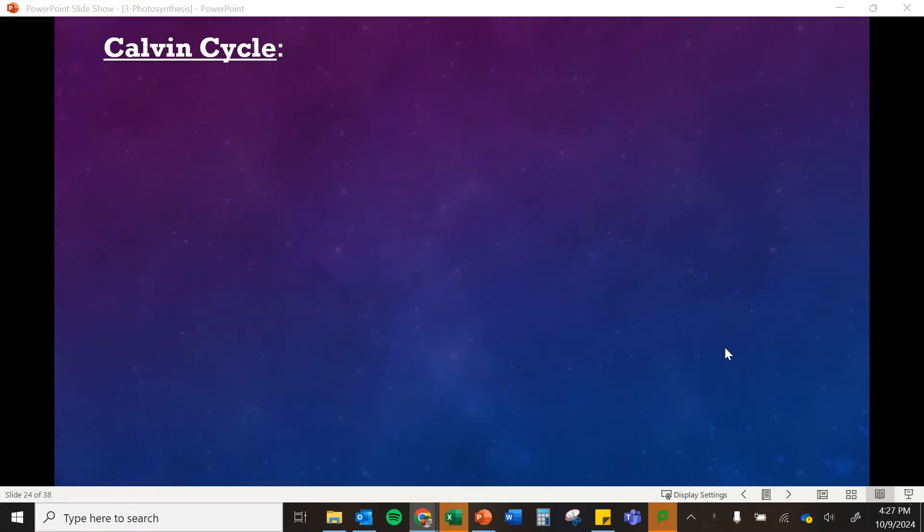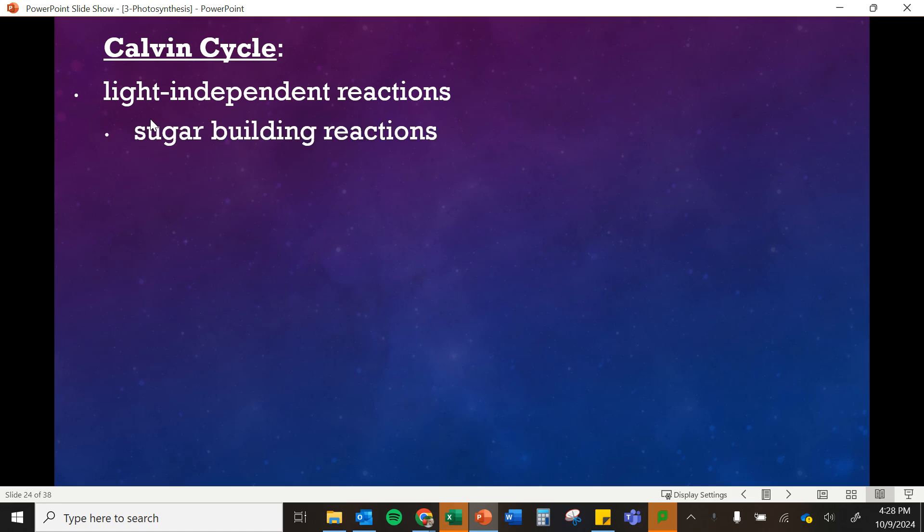Hey guys, I'm going to go through the Calvin cycle. This is the second step in photosynthesis. This is also sometimes called the light-independent reactions because they don't require light like our first step, the light-dependent reactions do.